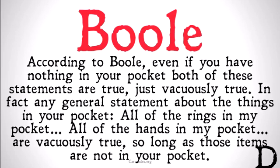In fact, any general statement about the things in your pocket — all of the rings in my pocket, all of the hands in my pocket — are vacuously true, so long as those items are not, in fact, in your pocket. So I could say all of the rings in my pocket are purple, and according to Boolean logic, that will be true if I have a purple ring in my pocket, and it will be vacuously true if I have nothing in my pocket.